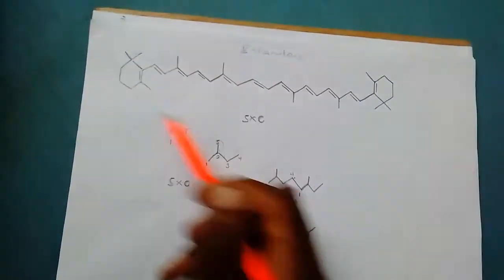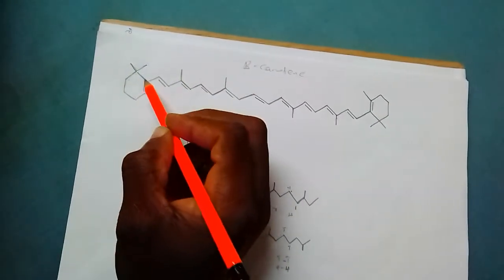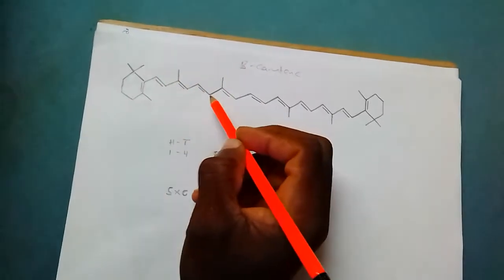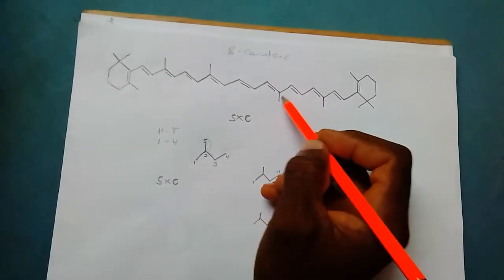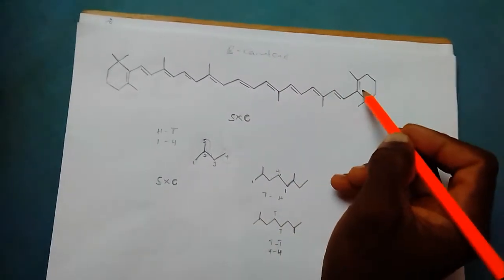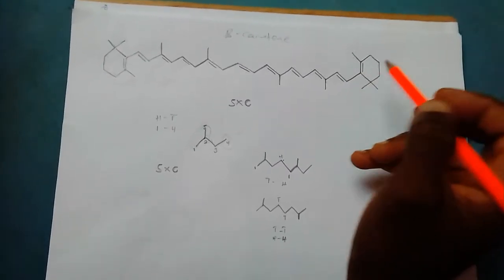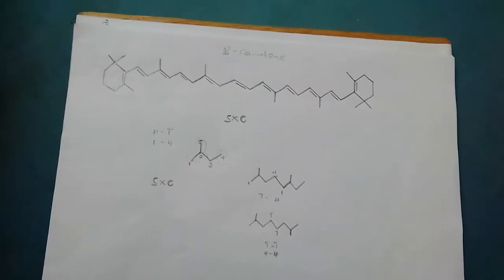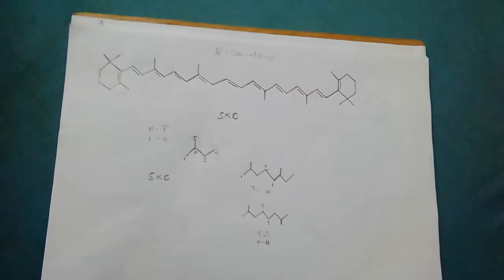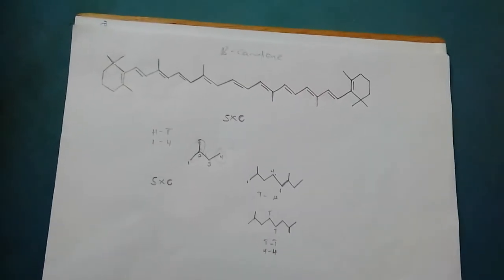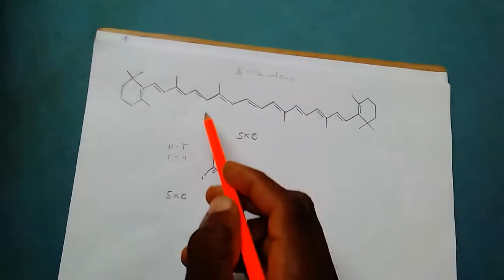So here, if you count the number of carbons, you get 1, 2, 3, 4, 5, 6, 7, 8, 9, 10, 11, 12, 13, 14, 15, 16, 17, 18, 19, 20, 21, 22, 23, 24, 25, 26, 27, 28, 29, 30, 31, 32, 33, 34, 35, 36, 37, 38, 39, 40. So this is 40 carbons. It is likely to be a terpene because 40 is a multiple of 5, and the isoprene unit is a 5-carbon compound. This means that the number of isoprene units in this compound is going to be 8, which is 40 divided by 5.